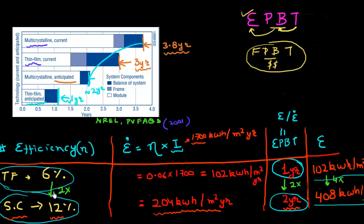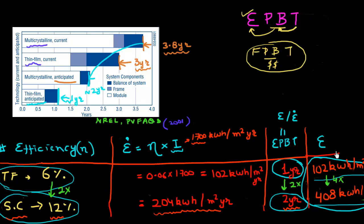So even though you have twice higher efficiency, you still need two times more — two times more the amount of time to recover back that energy. What I want to do in this video is to pull the curtains on this a little bit and dive into a little more detail about why we require four times the amount of energy to make a single crystalline based solar cell.